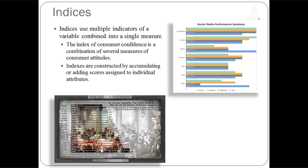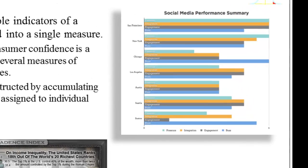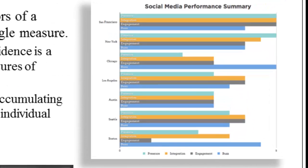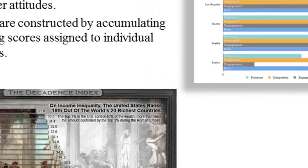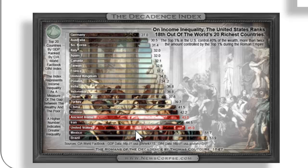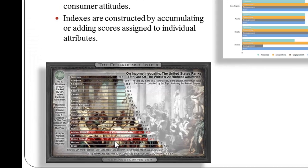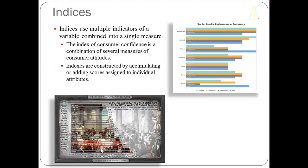Here's one of the distinguishing characteristics of an index: typically they're additive, meaning we take several variables and add their values together. Scales might be done differently by weighting the different values or measuring a sense of intensity. What they share in common is that they're both composite measures. We're going to create a single new variable based on the values of six other variables and add them together to make an additive or cumulative index.